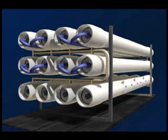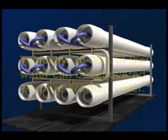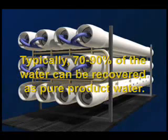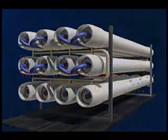The permeate water then flows out the end of the vessel and is collected as the product. The reject or concentrate from that vessel may then flow through another vessel producing more permeate. The remaining concentrate may then be disposed of as waste or partially recycled as the feed. Typically 70-90% of the water can be recovered as pure product water.